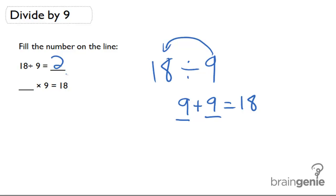And to check it we can do the opposite of division which is multiplication. 2 times 9 does give me the original 18 so I know I'm on the right track and that's the correct answer.